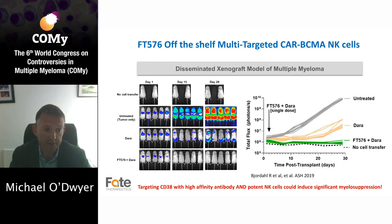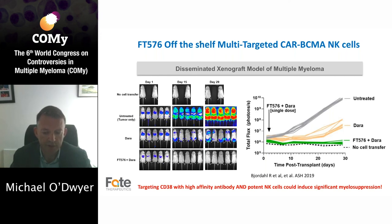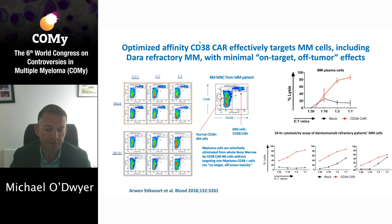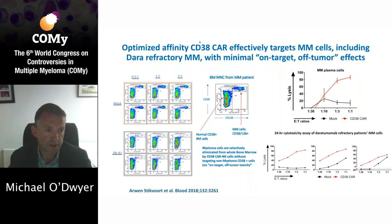That result is perhaps not unexpected in a xenograft model with immunodeficient mice, but one very important issue that remains to be addressed is the clinical safety of these cells. There is the potential that targeting CD38 with a high-affinity antibody in the presence of very potent effector NK cells could lead to significant myelosuppression. An alternative approach is therefore to target CD38 with a CAR-NK using an optimised CD38 antibody which only binds to malignant plasma cells with high expression of CD38, with minimal on-target off-tumour effects. Working with Tia Mutis and colleagues at VUMC in Amsterdam, we've developed a CD38 CAR-NK with these precise properties.